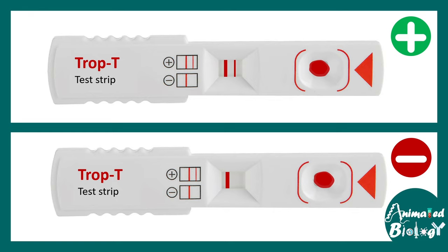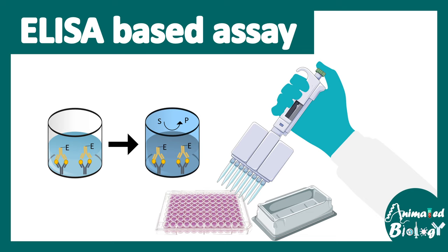Note that if no line appears, the test strip is not functional. Even if the test is negative, one line should always appear — this is the positive control. ELISA-based assays can also be used to determine the TROP-T level in the blood.